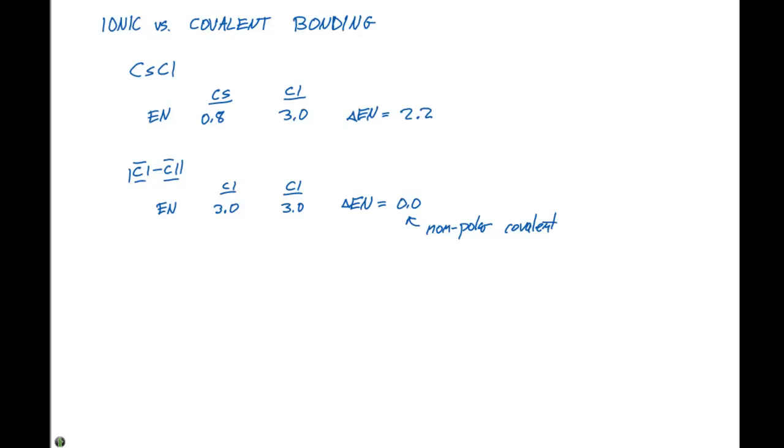If we look at a polar covalent complex like HCl, our hydrogen has an electronegativity of about 2.1, our chlorine 3.0. So our difference in electronegativity is going to be 0.9. We have a non-metal bound to a non-metal here, so this would be characterized as polar covalent.